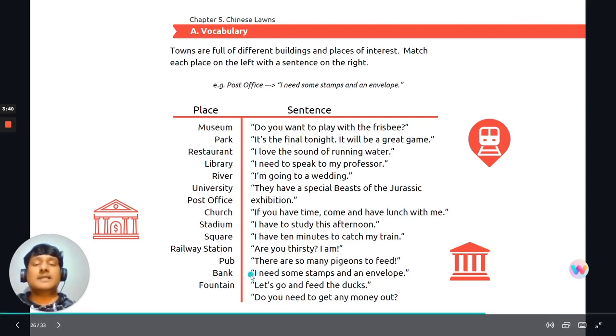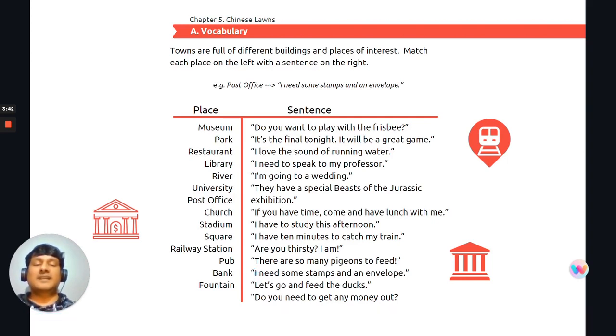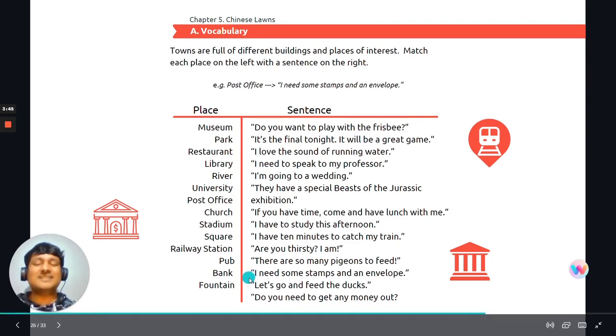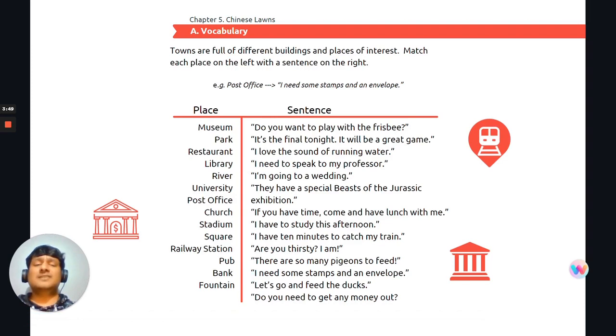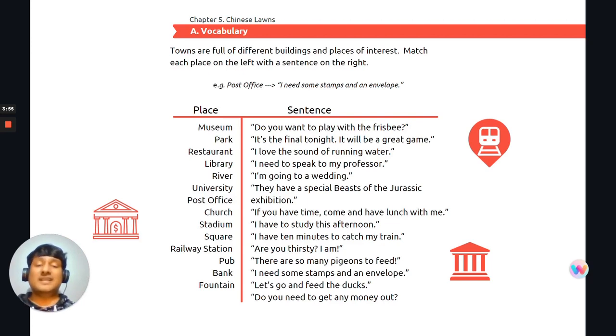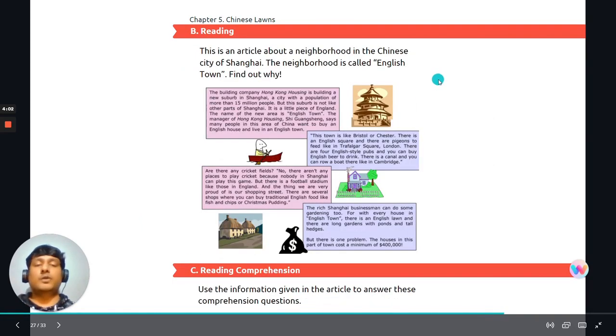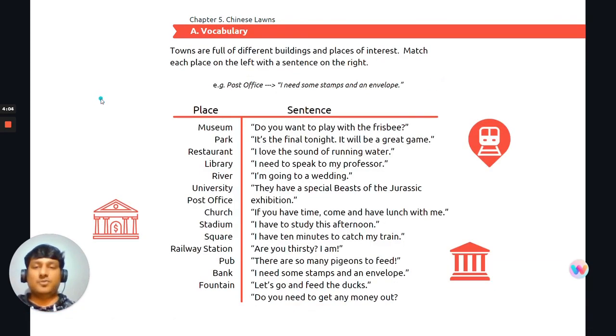I need some stamps and an envelope. Well, you better get out and buy some then. The next one, let's go and feed the ducks. Again, another animal lover. They are actually suggesting it this time. Whilst the other person was just gawking probably or staring at how many pigeons they are to feed. And the last sentence, do you need to get any money out? So they obviously are talking about withdrawing money from a place of withdrawal.